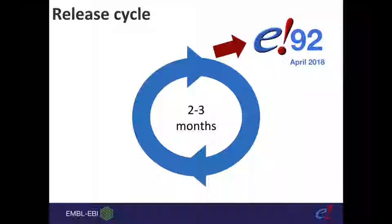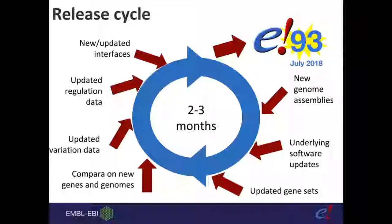Our release cycle is worth noting. We recently had a new release — Ensembl 92 — incorporating new genome assemblies, software updates, updated gene sets including the mouse reference, comparative genomics updates, variation data updates, and a new regulatory build for mouse. Sometimes data can change between visits, so it's worth noting which version you're using. You can always revisit previous data through our archive sites.